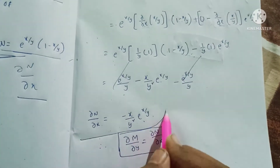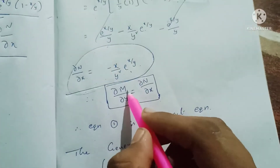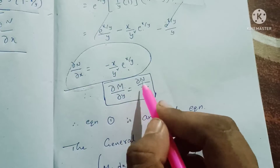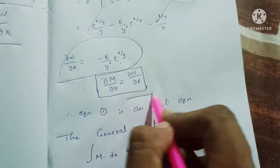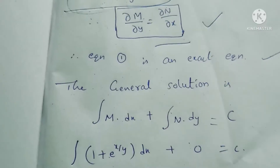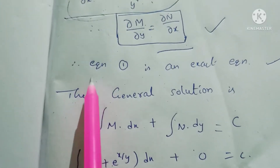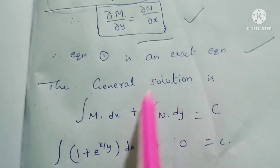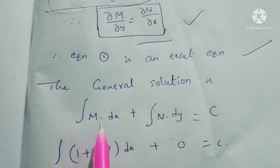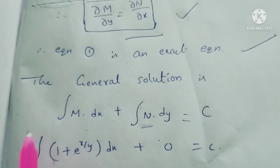Since dou M by dou y is equal to dou N by dou x, the equation 1 is an exact equation. The general solution is: integral M dx plus integral N dy is equal to c.